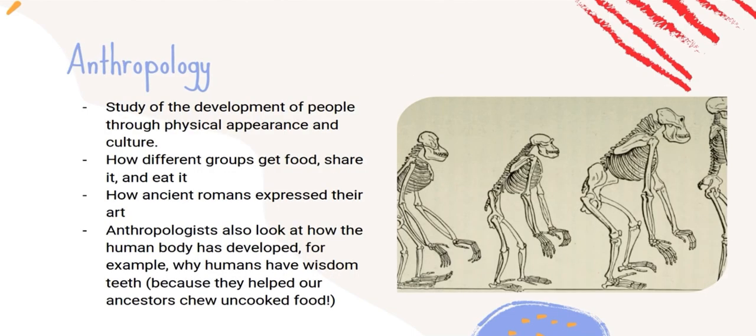Next, we have anthropology, which is the study of the development of people through physical appearance and culture. For example, anthropologists study how different groups get food, share it, and eat it. They could also study how ancient Romans expressed their art. Anthropologists also look at how the human body has developed — for example, why humans have wisdom teeth. This is because they helped our ancestors chew uncooked food, so despite the fact that we now get rid of them, they did help our ancestors back in the day.